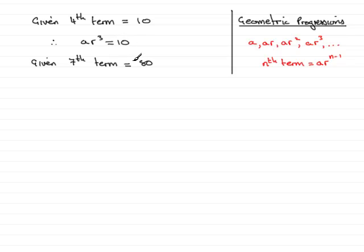And given the seventh term is 80, that would mean that therefore A, the first term, times R to the power N minus 1, so that would be 6 because N would be 7 here, would equal 80. And so what I have is two equations which I'm going to number 1 and 2 that I have to solve simultaneously because I've got two unknowns, an A and an R. So I need to solve them simultaneously to find out what R is.